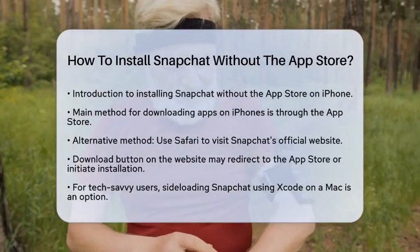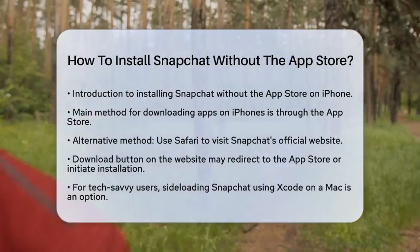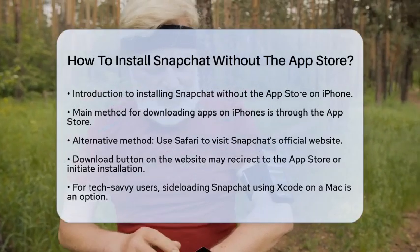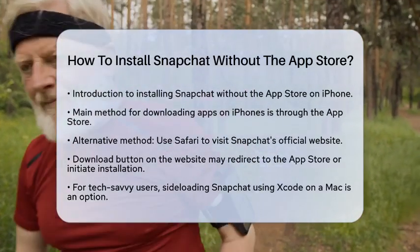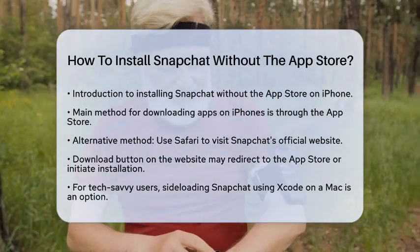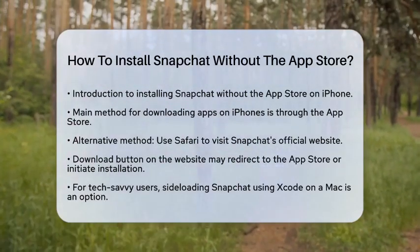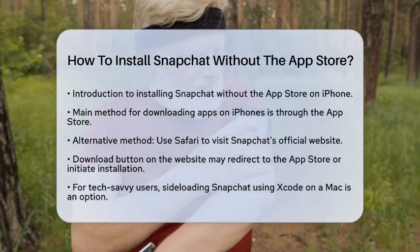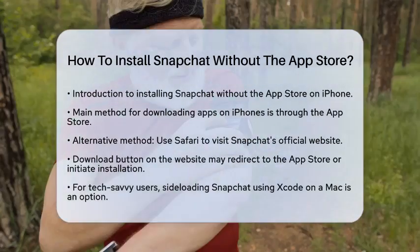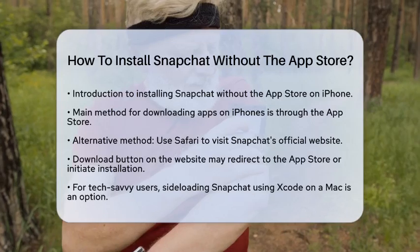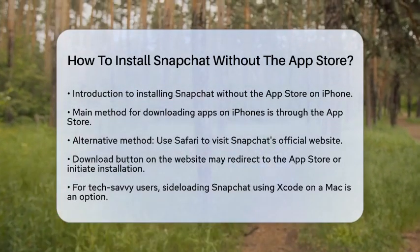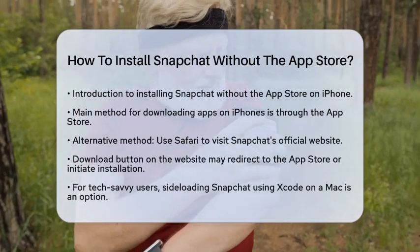First off, while the App Store is the main way to download apps on iPhones, there are alternative methods available. One way is through Safari. When you search for Snapchat on Safari and go to its official website, you might find a download button. Tapping this button can redirect you to the App Store or prompt an installation process without needing to open the App Store app directly. It is a straightforward way to start the installation.